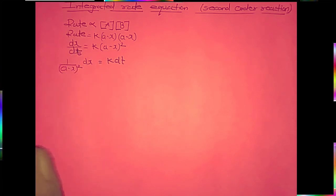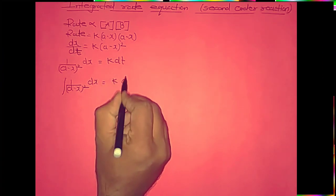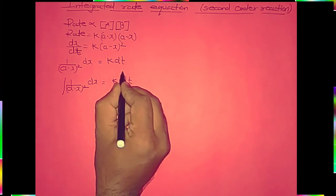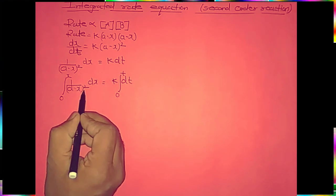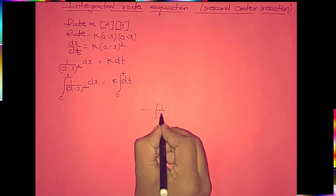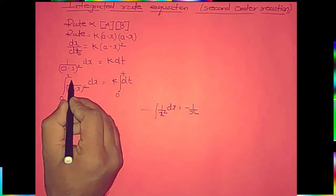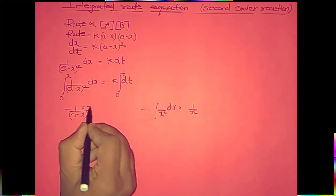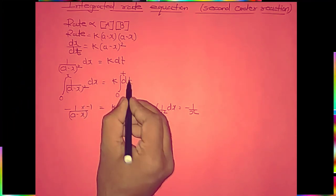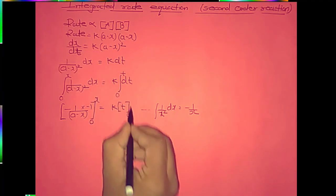Here the rate is dx/dt, so dt comes to this side. Now, initially time was 0 and finally it reached t. Initially concentration of product was 0 and it reached x. Integrating both sides with limits: on the left side from 0 to x for 1/(A minus x)², and on the right side from 0 to t for k dt.